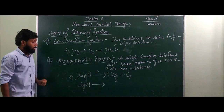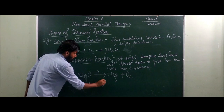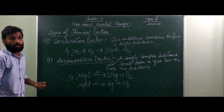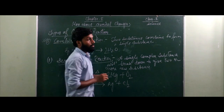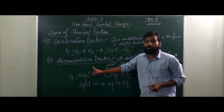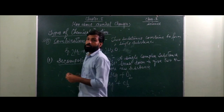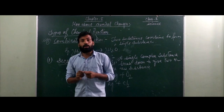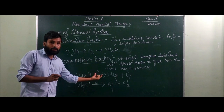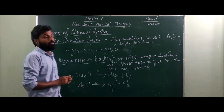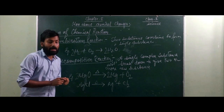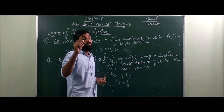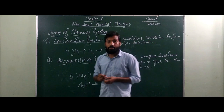For breaking any substance in decomposition, you need to supply energy. This energy can be in the form of heat, light, or electricity. Decomposition reaction can be classified into three types. One is thermal decomposition — the energy supplied is in the form of heat. Second is photolytic decomposition — the energy supplied is in the form of sunlight or light. Third is electrolytic decomposition — the energy supplied is in the form of electricity.